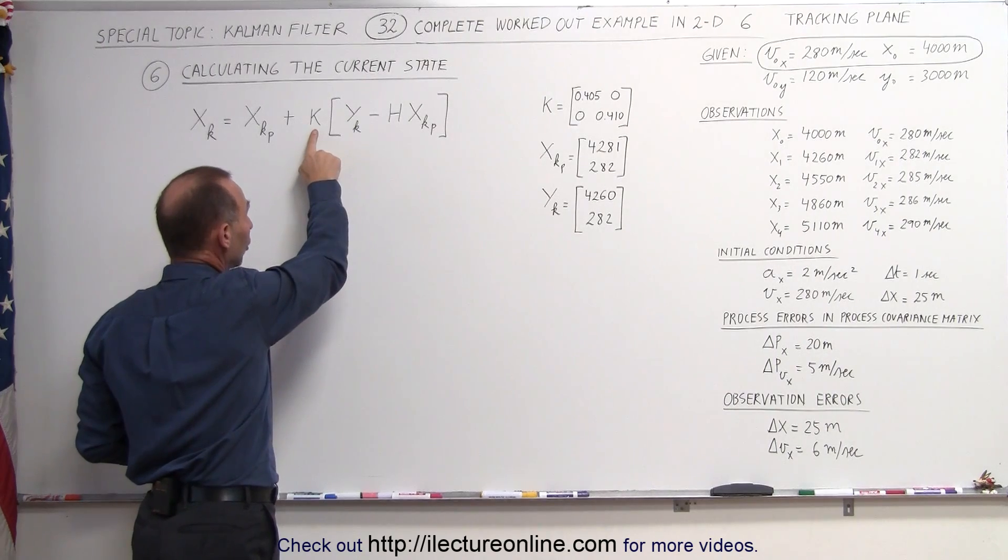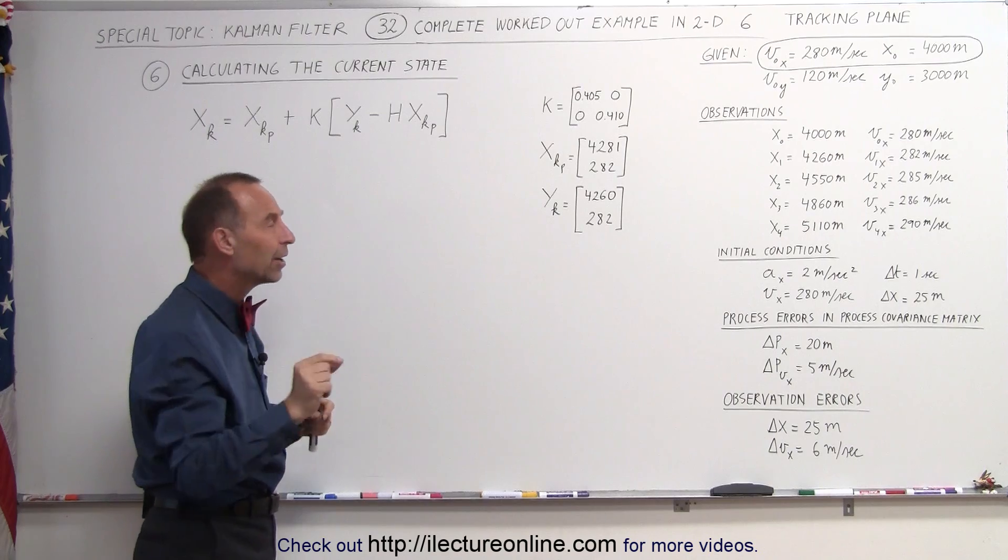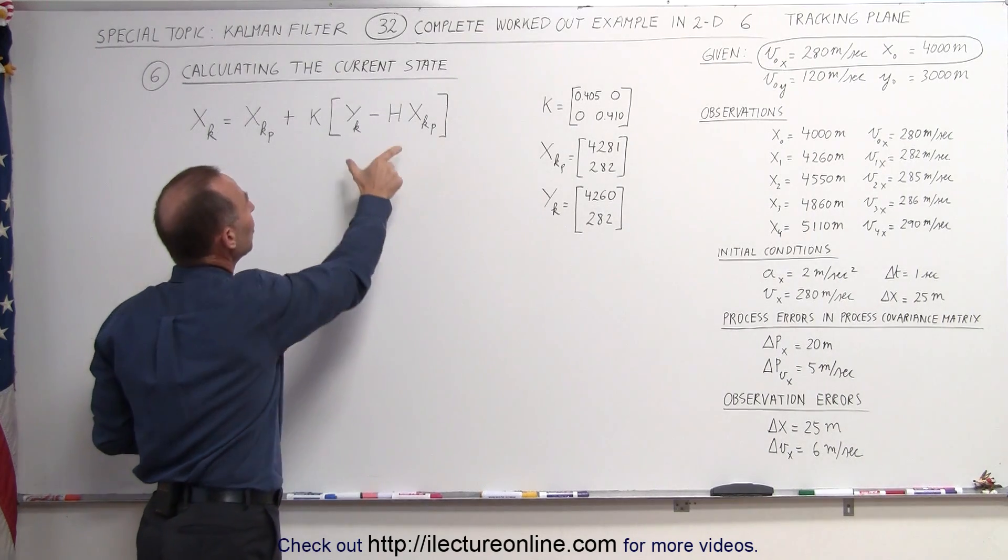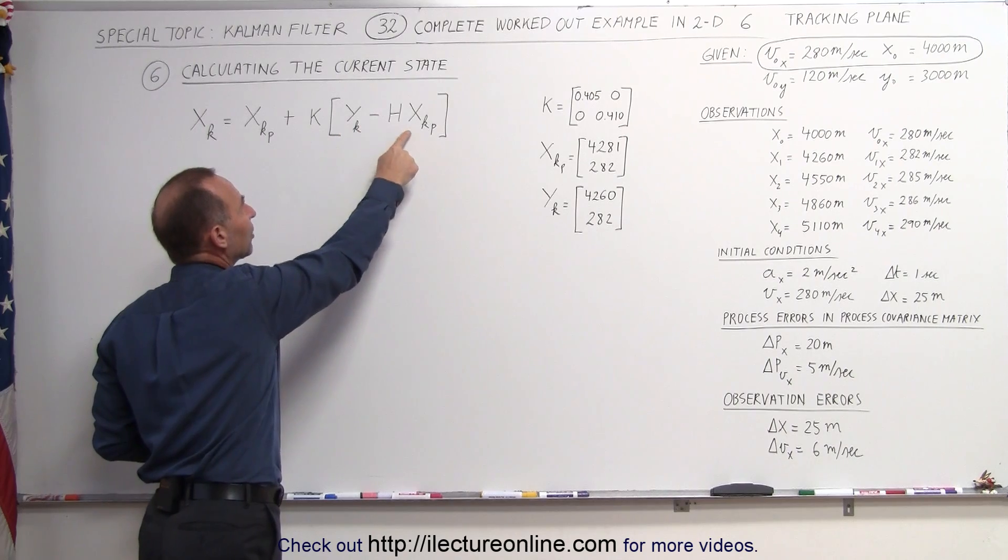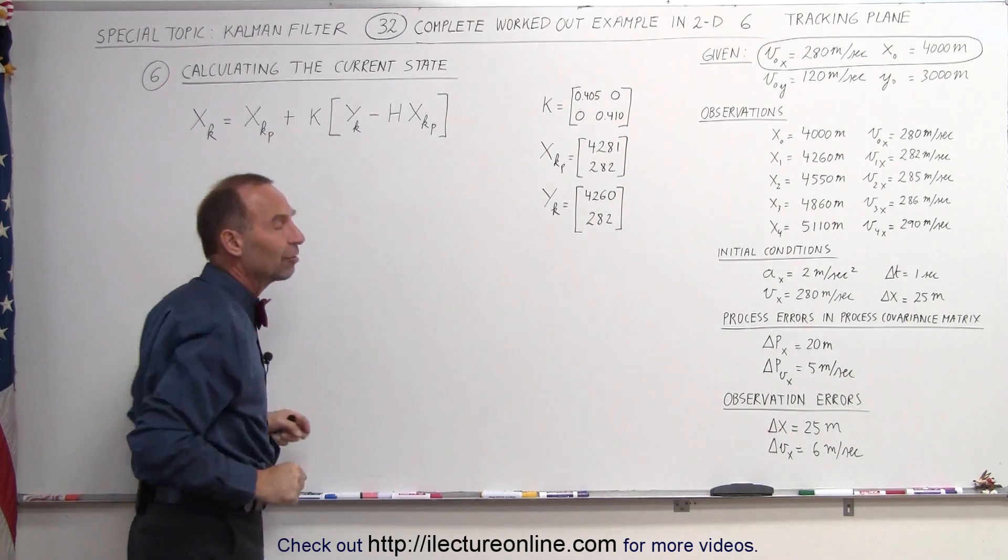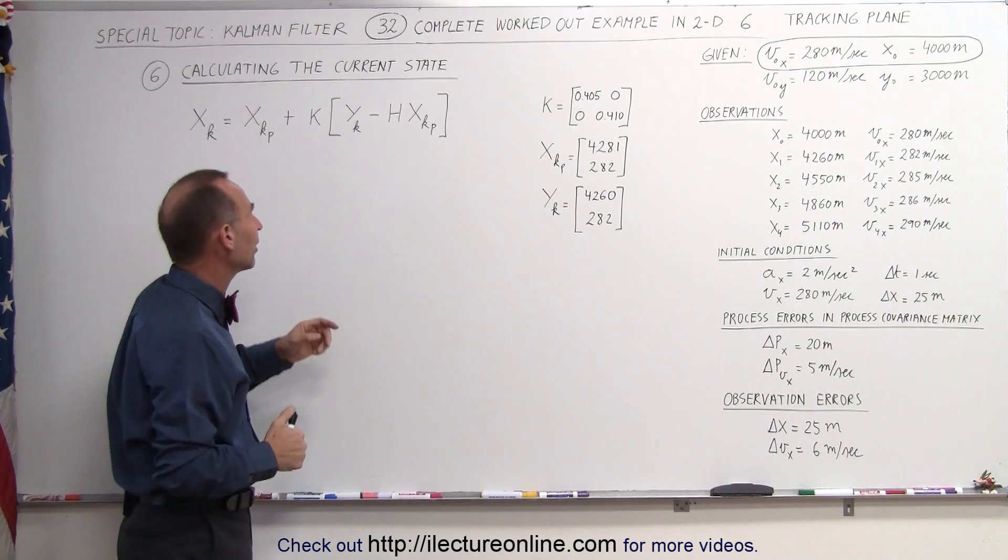If the Kalman gain is large, that means we have a very small assumed error in the measurement, then we want to take the entire difference between the measured value and the predicted value and add that to the predicted value. In other words, we put a lot more weight or importance in the measured values.